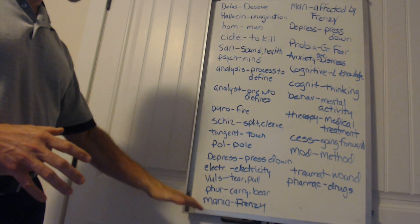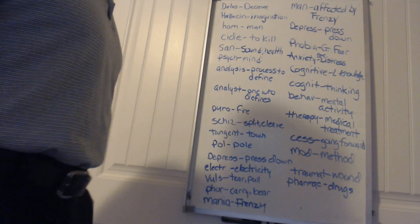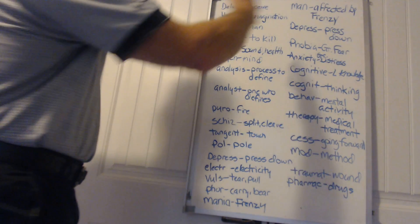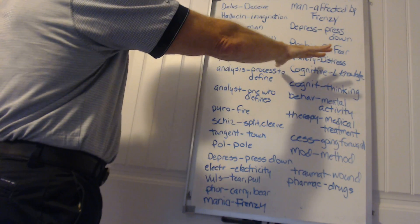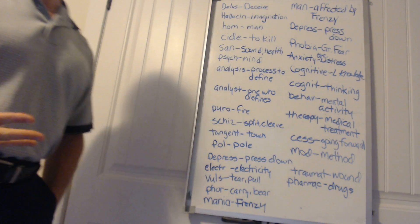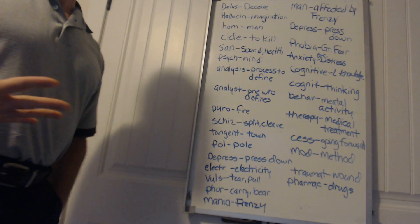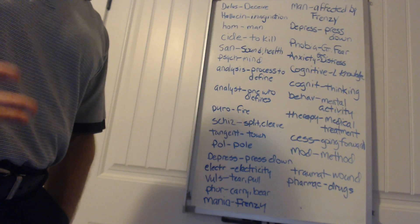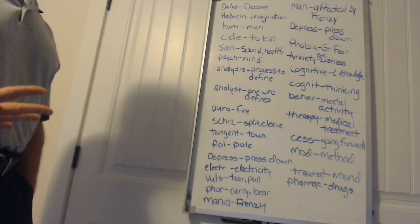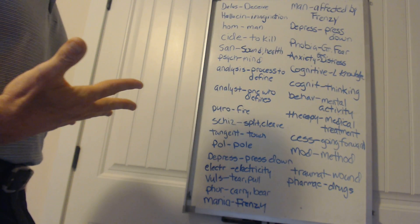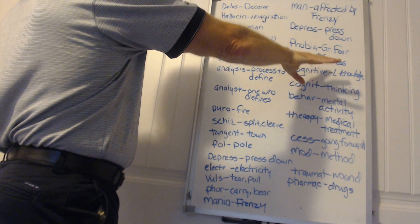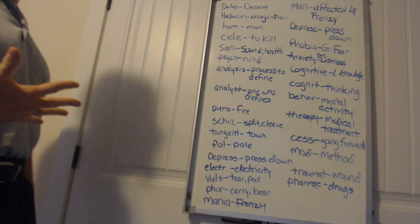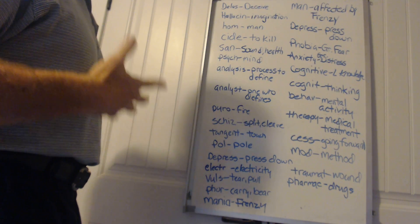Mania, as we already said, is frenzy. Man would be basically short for mania, affected by frenzy. Phobia is Greek for fear. Agoraphobia, for example, would be a fear of going outside. Agoro literally means marketplace, but it means having a fear of being trapped outside. Anxiety is Greek and it means distress or stress. Somebody who has an anxiety disorder has a great amount of stress associated with this disorder.